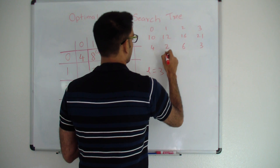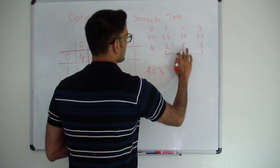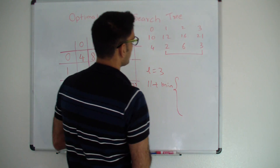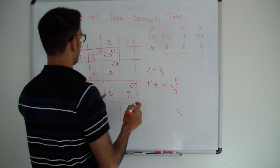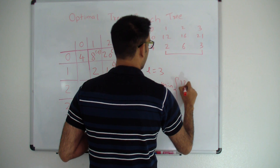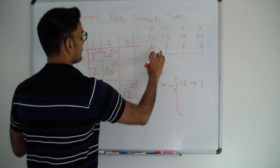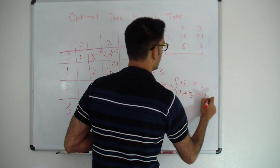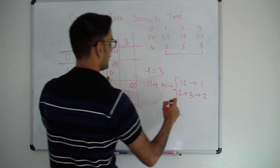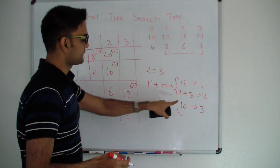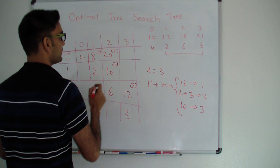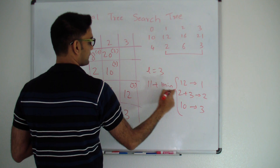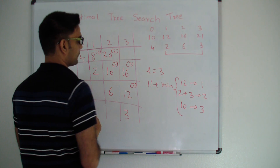For cell (1,3), sum of frequencies is 2 plus 6 plus 3 equals 11. Plus minimum of: if key 1 is root, cost is (2,3) which is 12; if key 2 is root, cost is (1,1) plus (3,3) which is 2 plus 3 equals 5; if key 3 is root, cost is (1,2) which is 10. Minimum is 5, so 11 plus 5 equals 16. Cell (1,3) is 16, with key 2 as root.